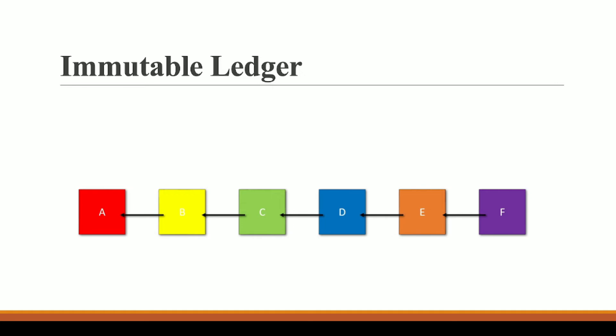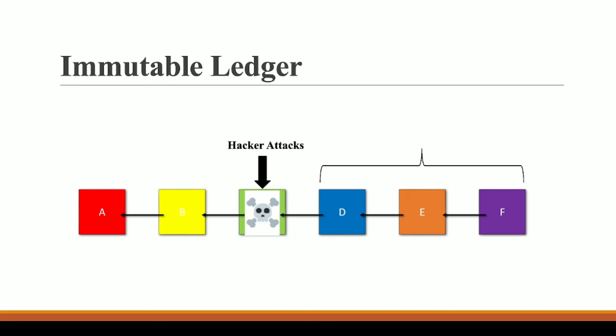To prevent this situation, we can use blockchain, which is an immutable ledger. Let's say this transaction — the data that you are buying this house — is stored on blockchain, specifically in block C. Now assume a hacker tries to manipulate the data in block C, which contains the record that the house belongs to you.